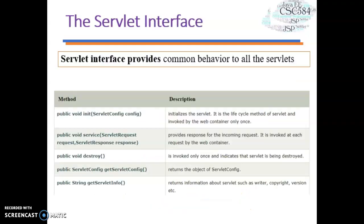Now let's discuss about the servlet interface. What is the servlet interface? The servlet interface provides common behavior to all servlets and defines methods that all servlets must implement. There are five methods in the servlet interface: the first one is the init method, the second is service, the third is destroy — these three are from the servlet lifecycle — and then getServletConfig and getServletInfo.